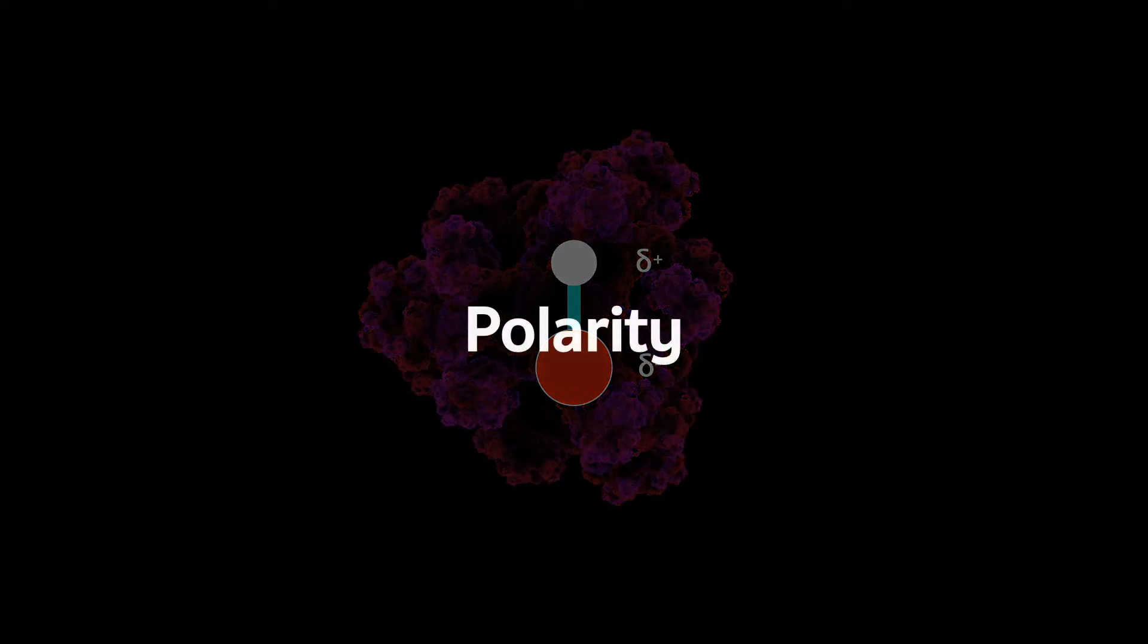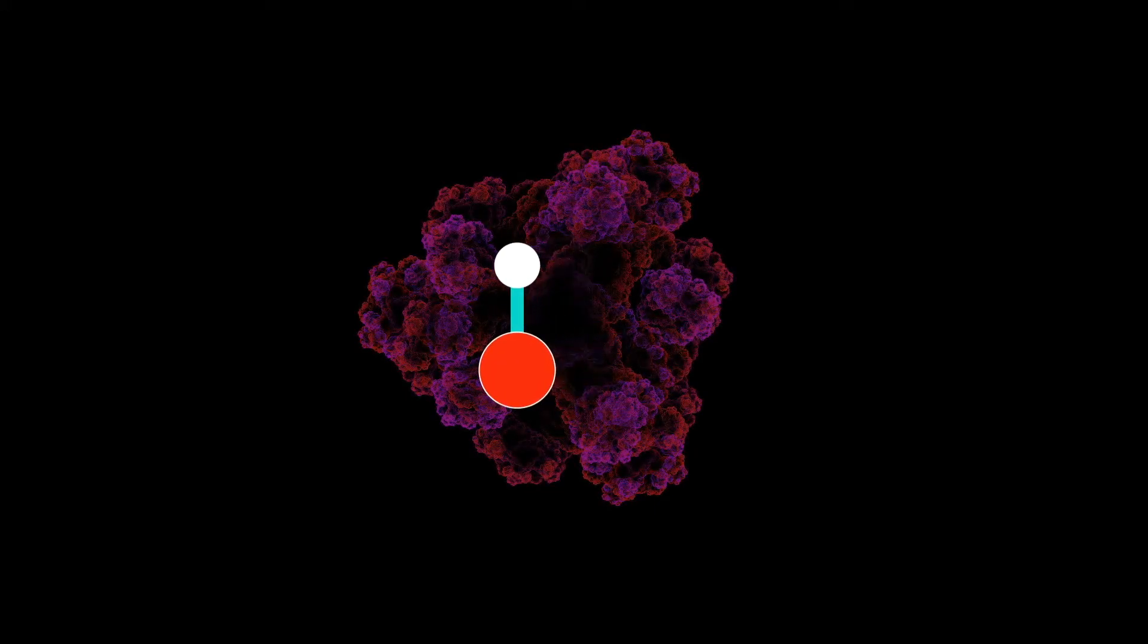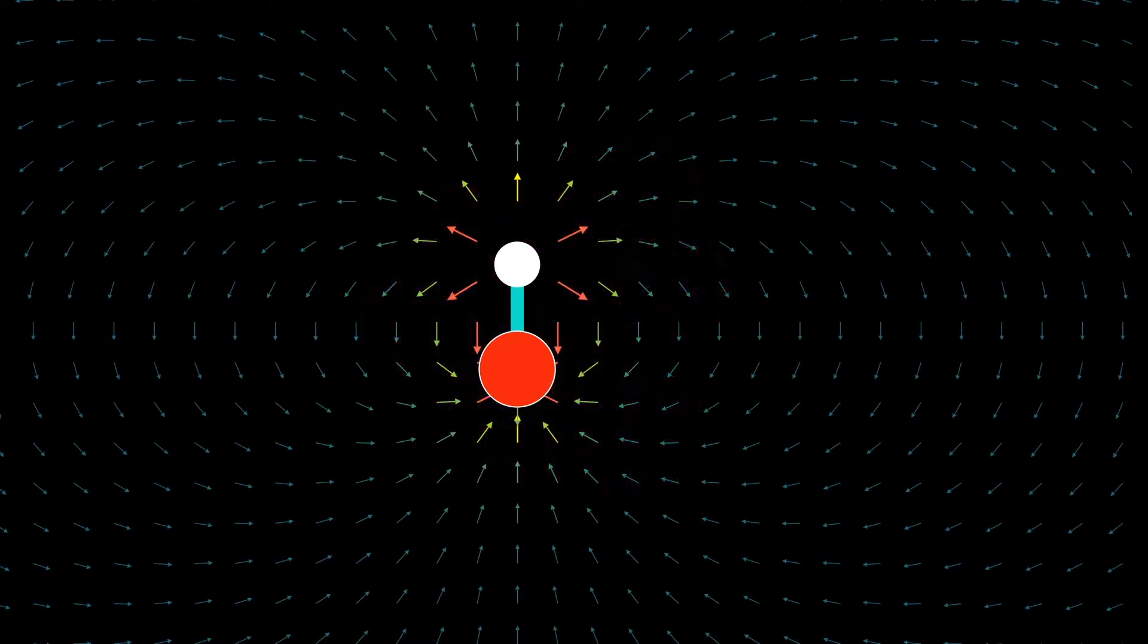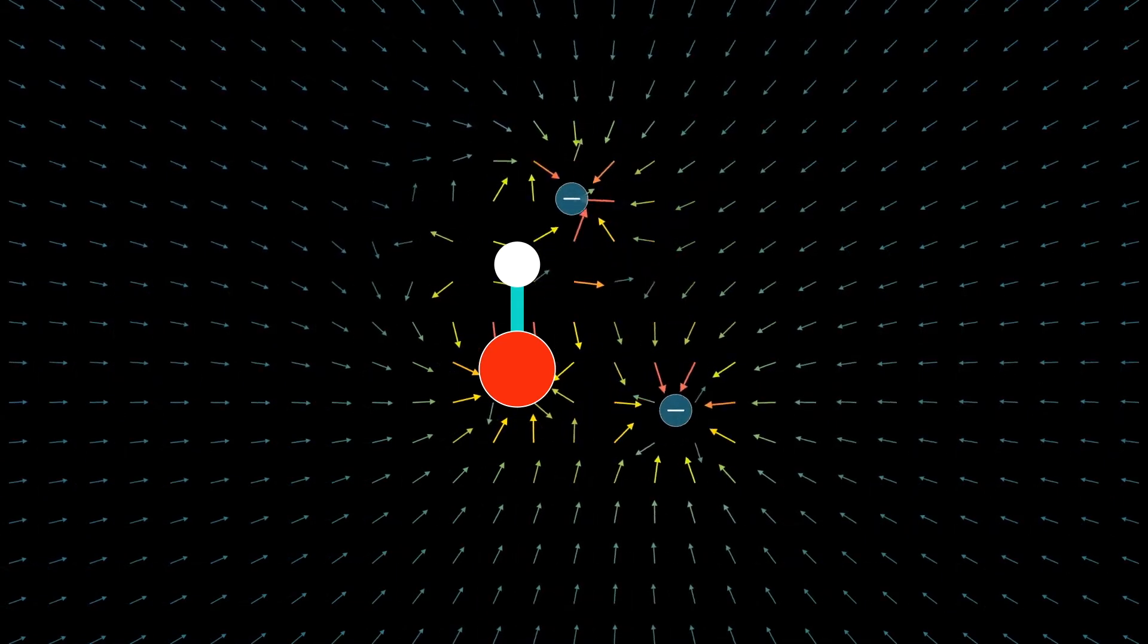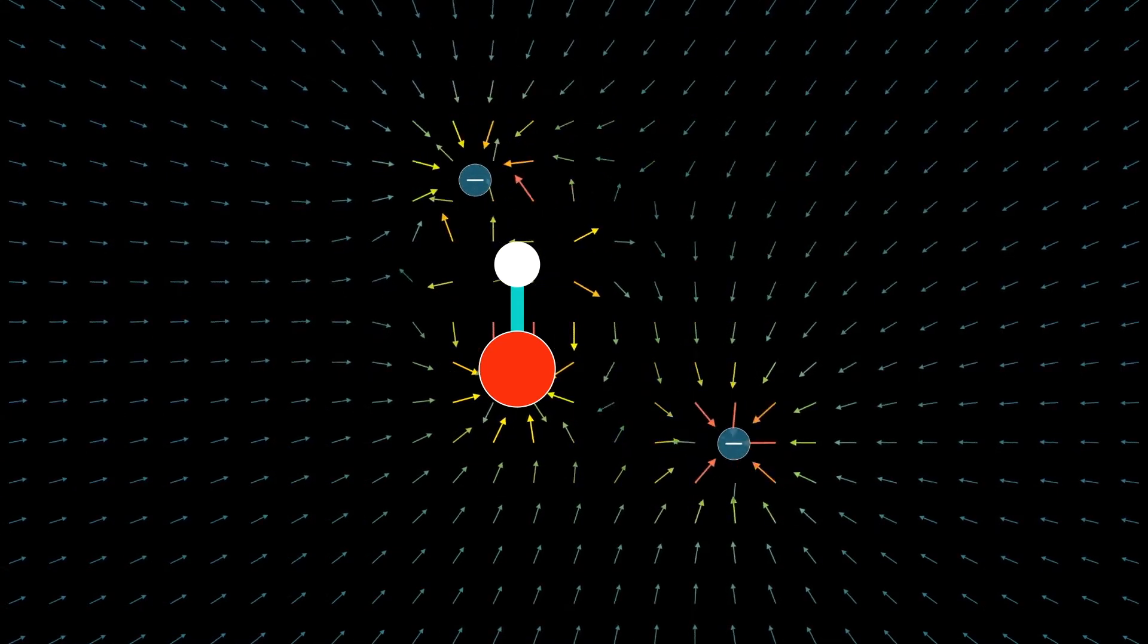This property right here is called polarity, since it's sort of like a magnetic pole, except we have positive poles and negative poles, instead of north and south poles. As you can see here, the electrons are more attracted towards the hydrogen, and repelled by the oxygen.